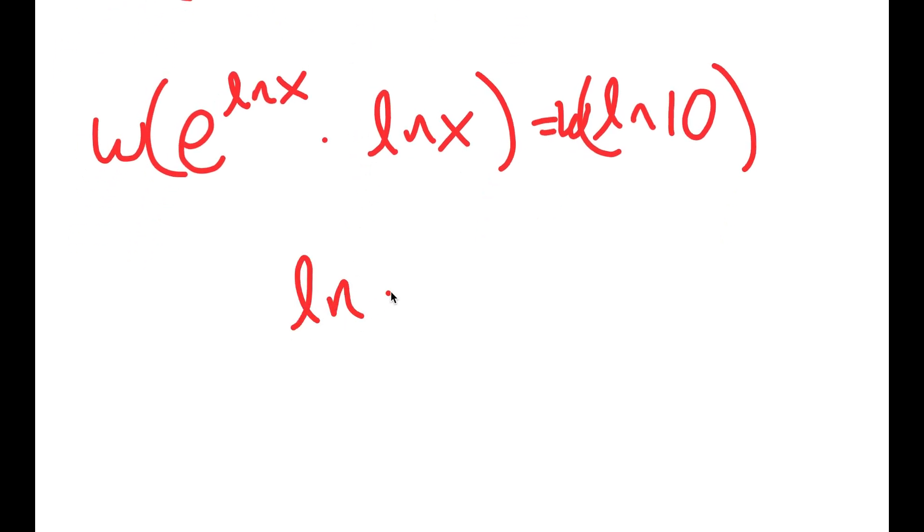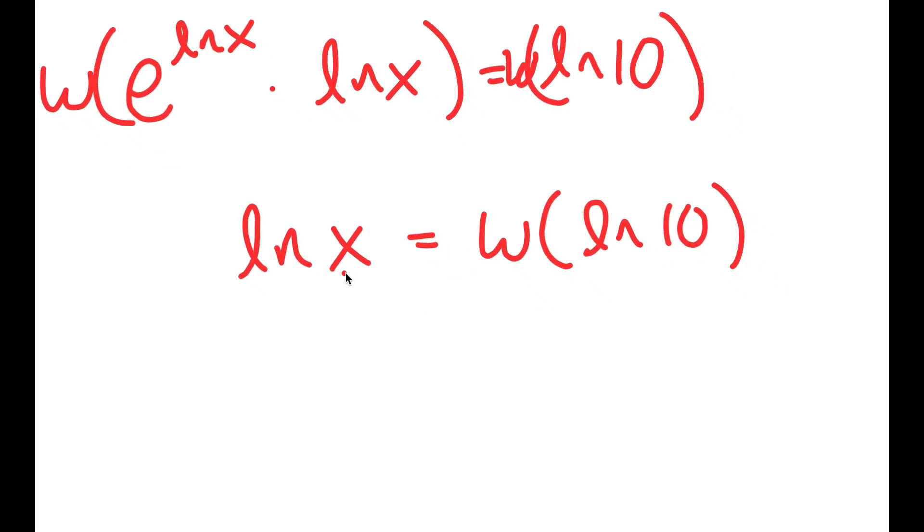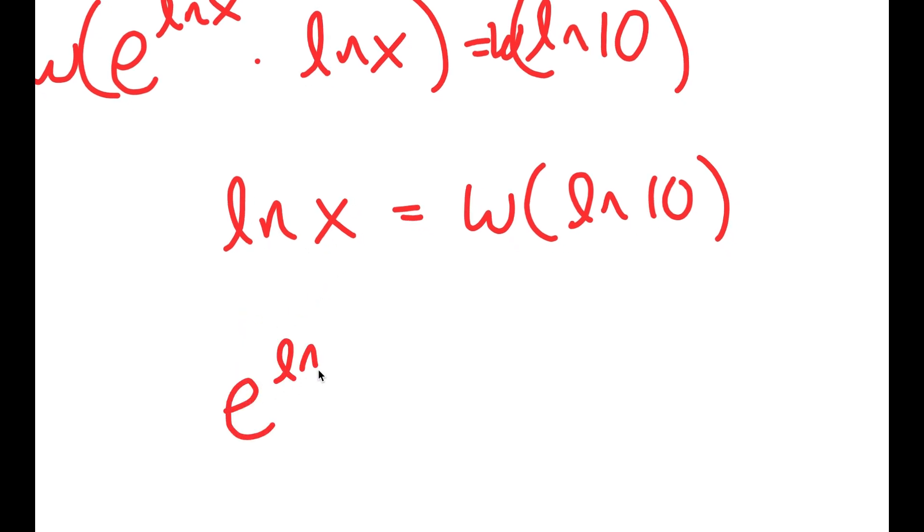So now I get ln of x is equal to W of ln 10. Now, we just want to find the value of x, not ln x. So I'm going to take e to the power of both sides. So I get e to the power of ln x is equal to e to the power of W of ln 10.